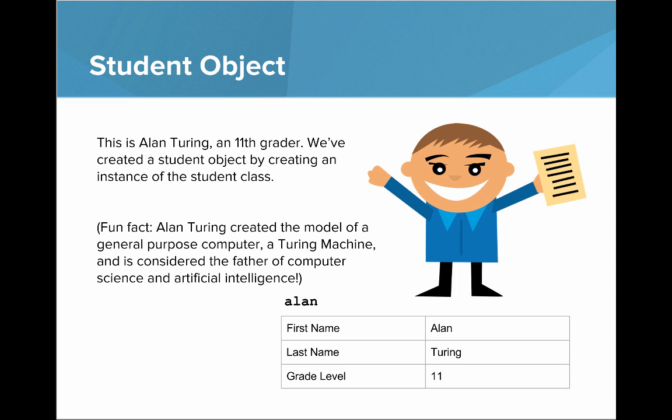And this here is another student object. This is Alan Turing, who's an 11th grader. We created a student object here by creating an instance of the student class. So if you look at the table below, you can see Alan has a first name of Alan, a last name of Turing, and a grade level of 11.